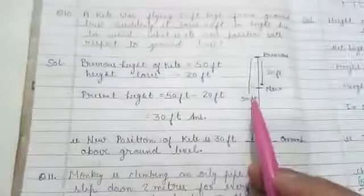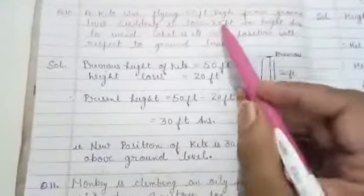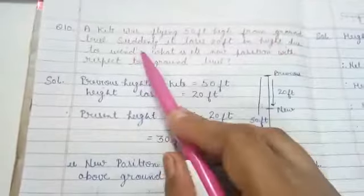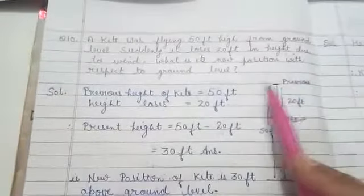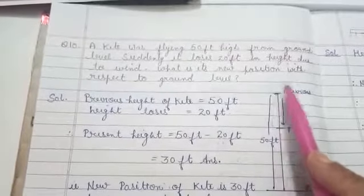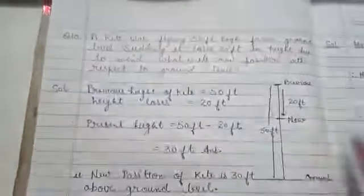Now look at the next question. Question number 10. This is: a kite was flying 50 feet high from ground level. Suddenly it loses 20 feet in height due to wind. What is its new position with respect to the ground level? See class, we can understand this question from the figure.